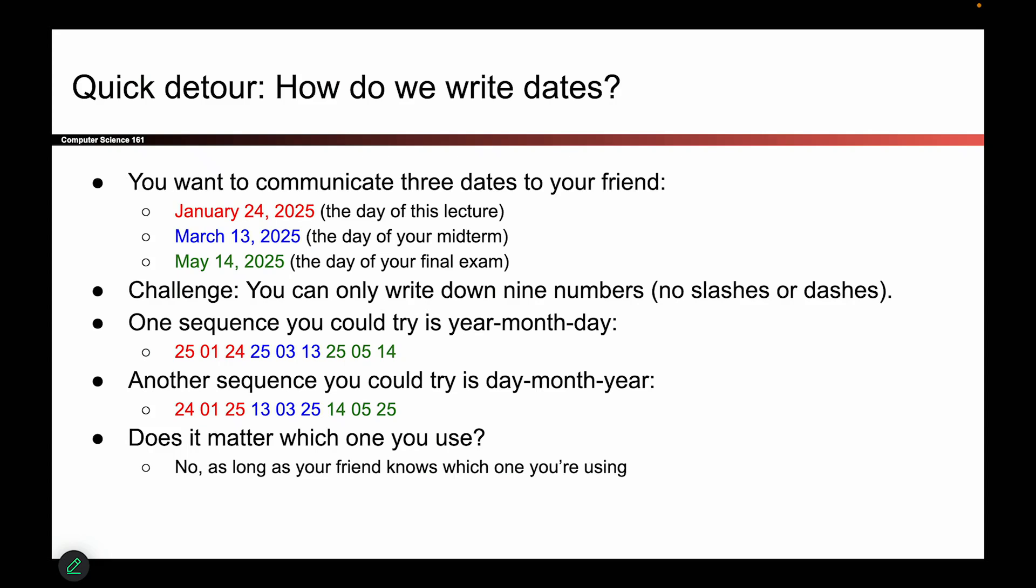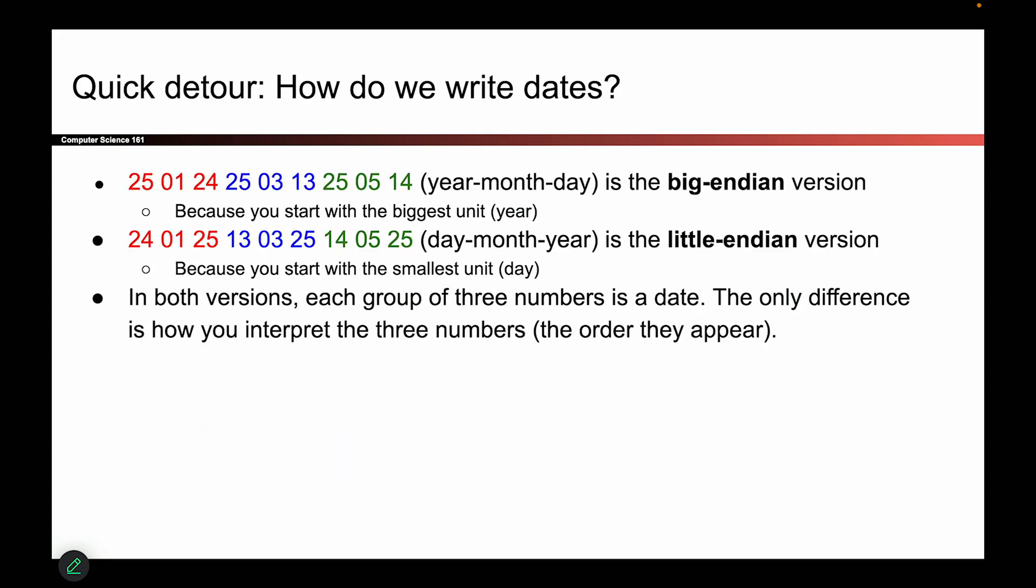So it turns out, this little exercise that we did is exactly the problem we had from before. You have a blob of multiple numbers, like multiple bytes. And you want to read this as something more intelligent, like a date. And the question is, in what order do you read these three numbers? Do you read them year, month, day? Or do you read them day, month, year?